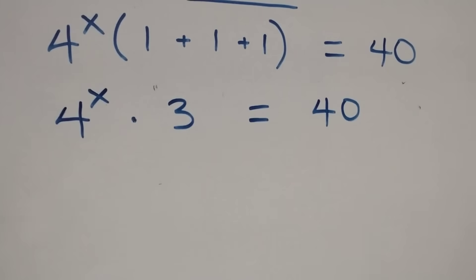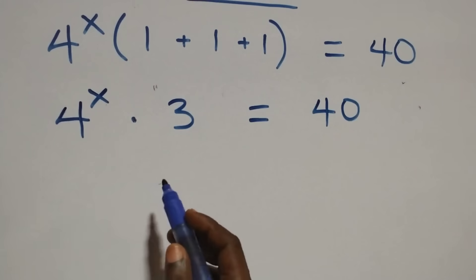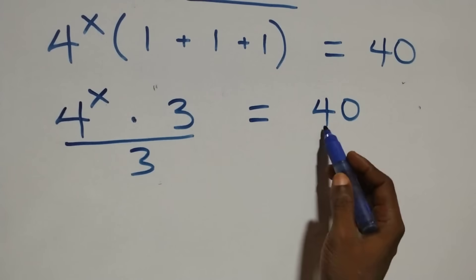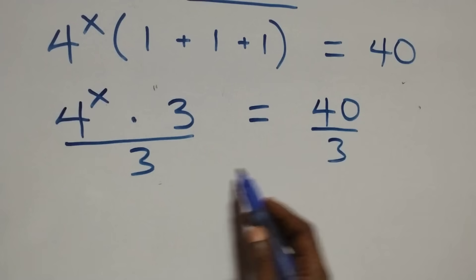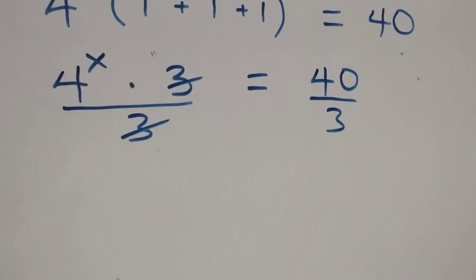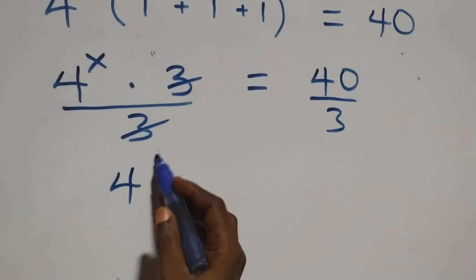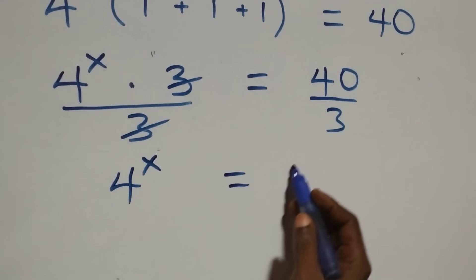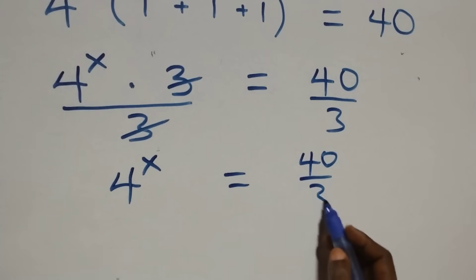The next step here, we divide both sides by 3. That is, divide this side by 3, also divide this side by 3. Here 3 cancelled each other. We have 4 raised to power x left, equals to 40 over 3.